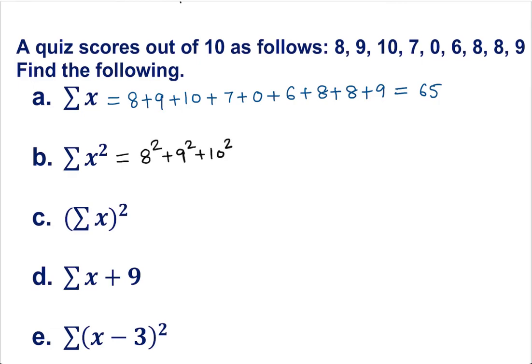So in this case it's going to be 8 squared plus 9 squared plus 10 squared plus 7 squared plus 0 squared plus 6 squared plus 8 squared plus 8 squared plus 9 squared, which is going to give us 539.